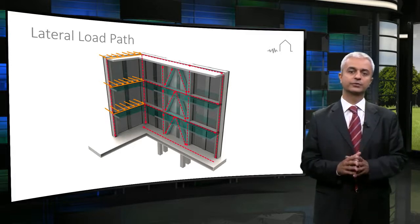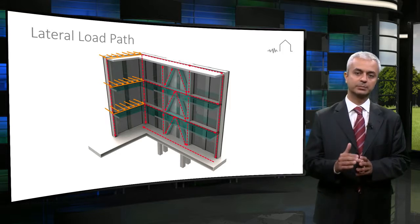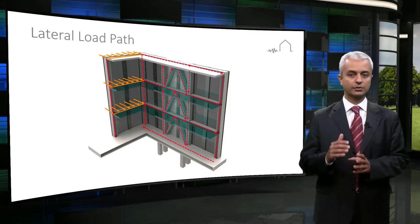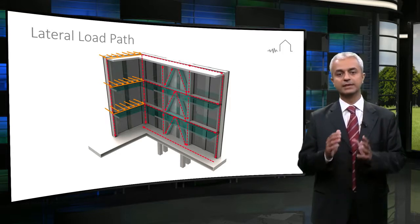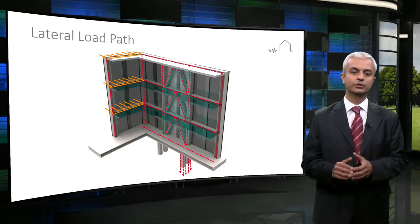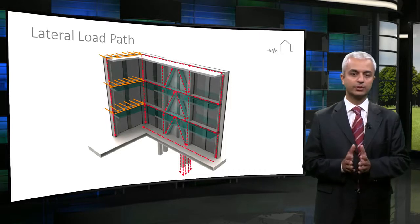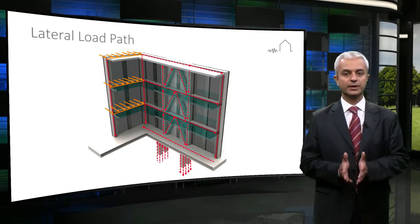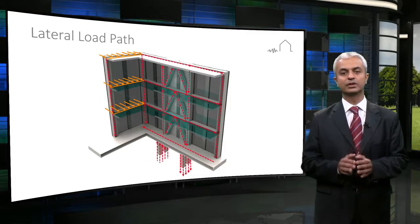The loads are first transferred from the diaphragms to vertical members. Columns or shear walls should have sufficient capacity to transfer these loads to the foundations, which in turn should safely transfer them to the competent soil. This way of transferring the loads is called load path.